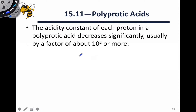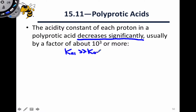The reason we need to consider the deprotonation steps separately is that these K values vary significantly. For a polyprotic acid, the successive Ka values decrease significantly. In general, Ka1 is the largest, and it's much greater than Ka2, which is much greater than Ka3, and so on.